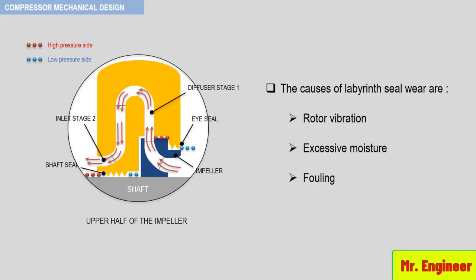A 10% drop in compressor head and efficiency with no evidence of fouling means that your stage seals are not performing their duties, and you need to check that as soon as you can.